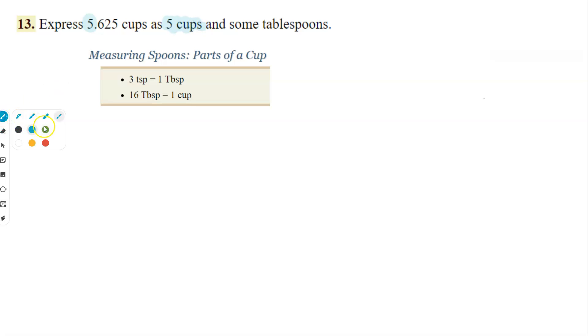So what we're really wondering is the point six two five. So to rewrite this question with the important parts, 0.625 cups is how many tablespoons?